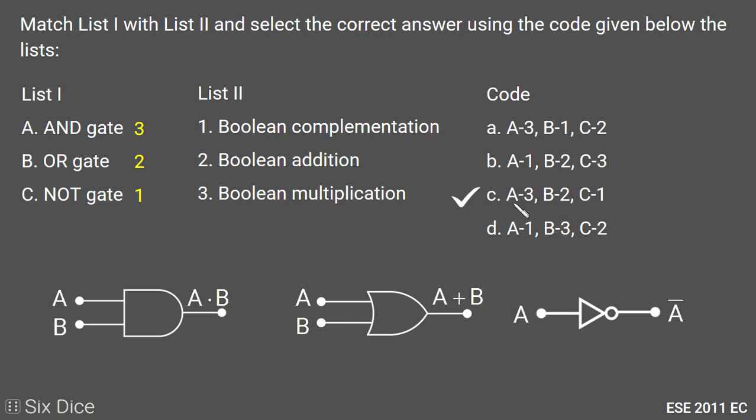So option C is the right answer where the code is given as A-3, B-2, and C-1.